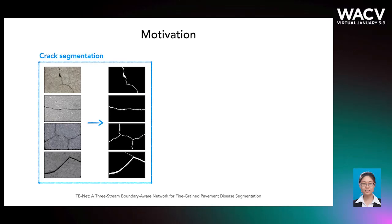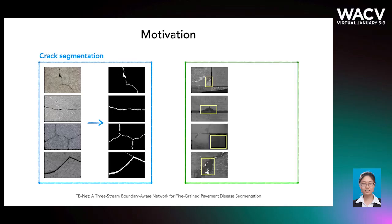Pavement disease segmentation is a fundamental problem in maintaining the condition of transport infrastructure such as airports, bridges, and roads. However, existing methods mainly address the tasks of crack detection and segmentation that are only tailored for long thin cracks. So for other types of diseases with a wider variety of sizes and patterns, how to segment them?